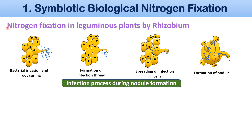Now let's see the process of nitrogen fixation in leguminous plants by Rhizobium. The bacteria enter the epidermal cell of the root and cause the root to develop an infection thread. The bacteria then reach the cortex through the thread, and cortex cells divide rapidly to form a nodule. Rhizobium also multiplies within the nodule and begins the conversion of nitrogen to ammonia. The enzyme nitrogenase present in the nodule needs anaerobic conditions for nitrogen fixation. So when atmospheric air reaches the root nodule, oxygen combines with leghemoglobin and forms oxy-leghemoglobin, maintaining anaerobic conditions favorable for nitrogen fixation.